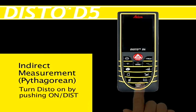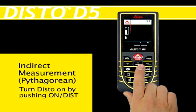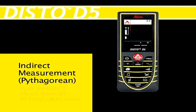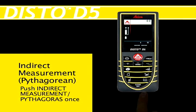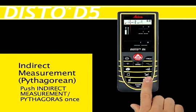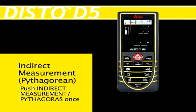Turn the Disto unit on by pushing the On/Dist red button at the top of the center keypad. Push the Indirect Measurement Pythagoras button one time — the third button down on the right — to select a simple point-to-point measurement.